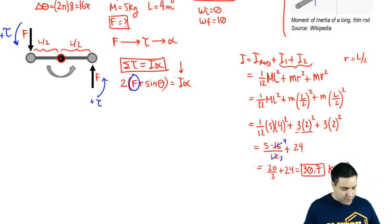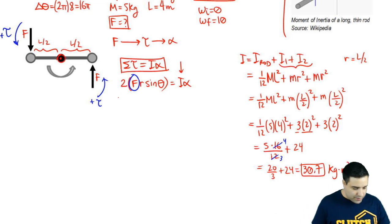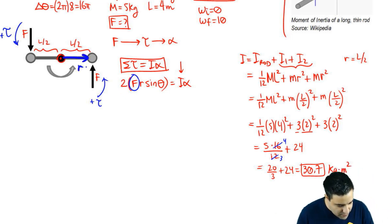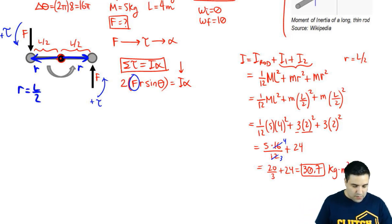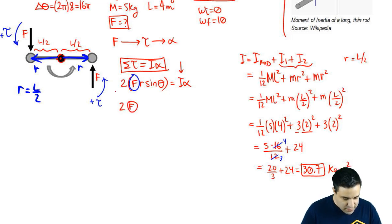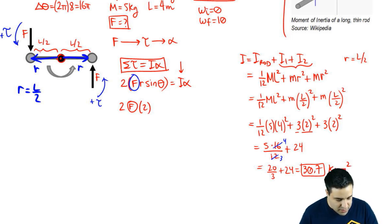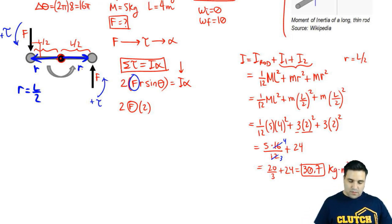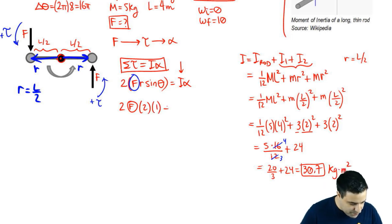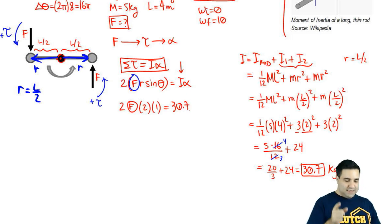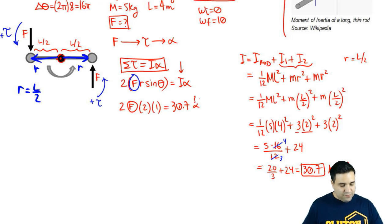Looking at the rest of the torque equation: R is the moment arm for torque, which for these forces is L over two. The length is four, so L over two is two. The angle the R vectors make with the forces is 90 degrees for both, and sine of 90 is one. I is 30.7. We have everything except alpha, so we need to find alpha.